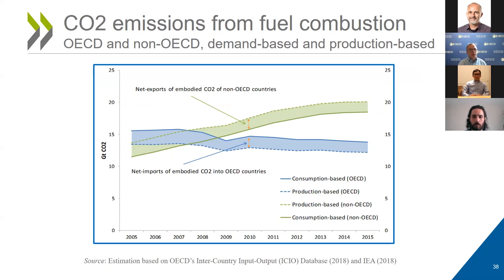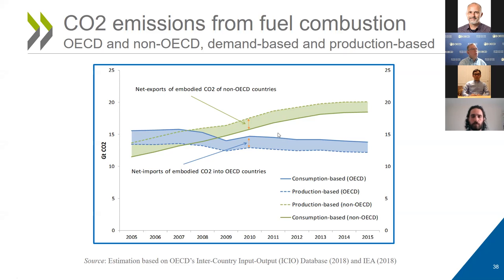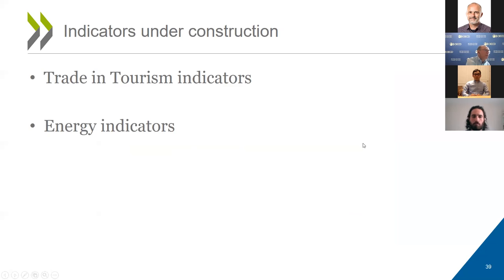For CO2 emissions, as Nori talked about last time, you can measure how much emission comes from the consumption side versus the production side. In these charts, the developing countries produce more than they consume — they export CO2 — while the OECD countries consume more than they produce, meaning they are net importers of CO2 emissions.